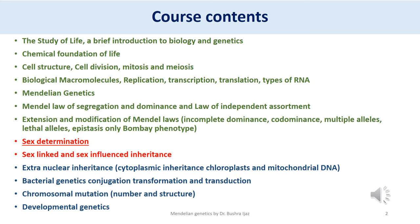Let's briefly look at the course content we have covered so far. We have completed the study of life, including a brief introduction to biology and genetics, chemical foundations of life, cell structure, cell division, mitosis and meiosis, biological macromolecules, replication, transcription, translation, and types of RNA. In our online lectures we have covered Mendelian genetics, Mendel's law of segregation and dominance, as well as the law of independent assortment. In the previous three lectures we covered the extensions and modifications of Mendel's laws.